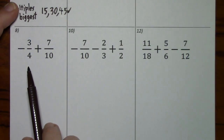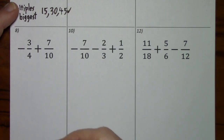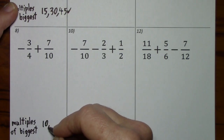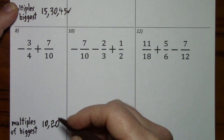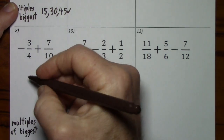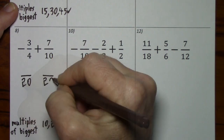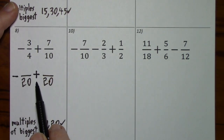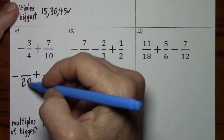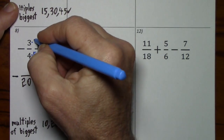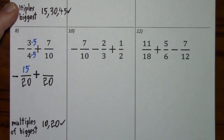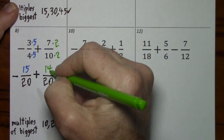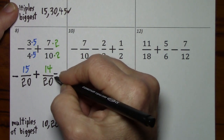Looking at number 8, we have different denominators, so we'll look at multiples of the biggest. That'll be 10, then 20, and 4 goes into 20. 20 is our least common denominator. Be sure to bring down this negative as well as that positive — you can call it a positive or a plus. To get from 4 to 20, you multiply by 5; do the same to the numerator. To get from 10 to 20, you multiply by 2; do the same to the numerator. When you combine these, signs are different, so you subtract and keep the sign of the larger.